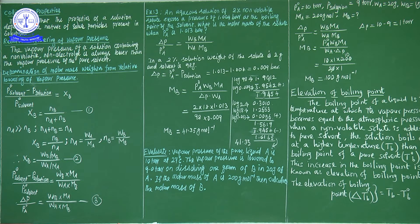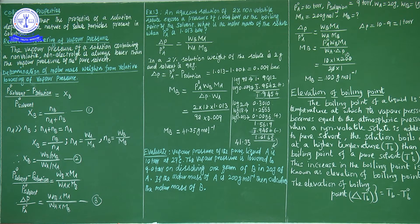Generally, the properties of the solution which depend on the nature of solute particles present in the solution are different from colligative properties. For example, if we consider the solvent as water and add the solute as sugar particles, then the taste of the solution is sweetness.